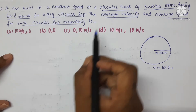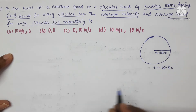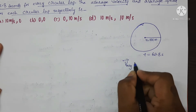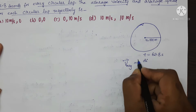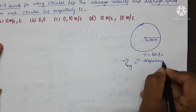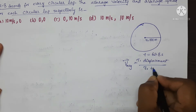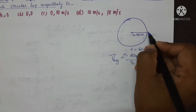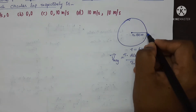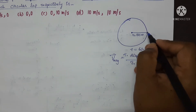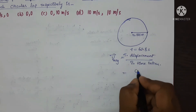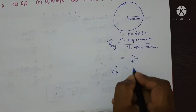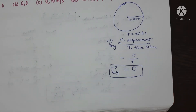Find the average velocity and average speed for each circular lap, that means for one complete rotation. First let us find the average velocity. The formula for average velocity is total displacement upon total time taken. In this case, the particle starts at a point, completes one full rotation, and ends at the same point. So the initial and final positions coincide, hence the displacement is zero. Therefore average velocity is 0.